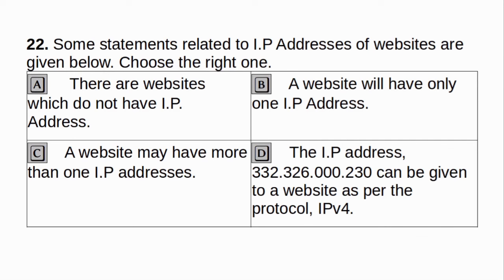Some statements related to IP addresses of websites are given below. Choose the right one. A. There are websites which do not have IP address. B. A website will have only one IP address. C. A website may have more than one IP address. D. The IP address 332.326.000.230 can be given to a website as per protocol IPv4. Answer: C. A website may have more than one IP address.